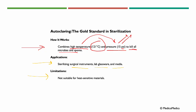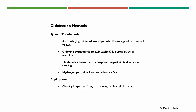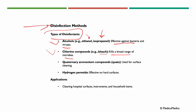Moving on to disinfection methods, we have types of disinfectants: alcohol — for example, ethanol and isopropanol — which are effective against bacteria and viruses. Chlorine compounds like bleach kill a broad range of microbes. Quaternary ammonium compounds (quats) are used for surface cleaning. Hydrogen peroxide is effective on hard surfaces. Applications include cleaning hospital surfaces, instruments, and household items.